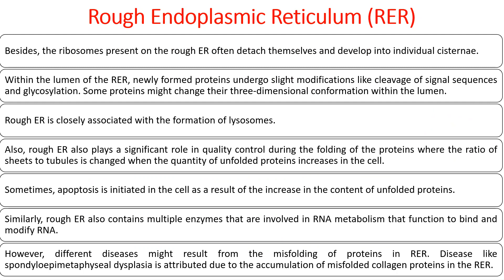Ribosomes on rough ER can detach and develop into individual cisternae. Within the lumen of RER, newly formed proteins undergo post-translational modifications — chemical and structural changes like cleavage of signal sequences, glycosylation, and conformational changes. RER also plays a significant role in quality control during protein folding, and apoptosis can be initiated due to accumulation of misfolded proteins. RER also contains enzymes associated with RNA metabolism.